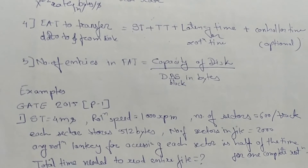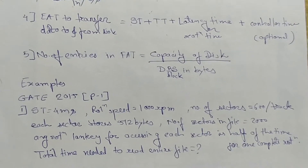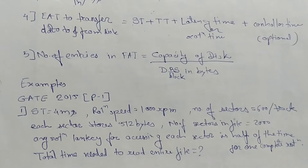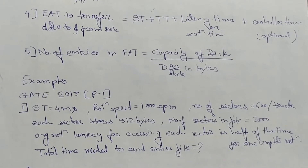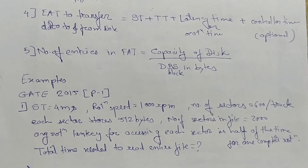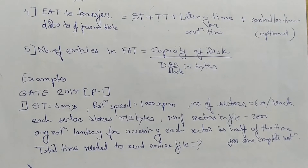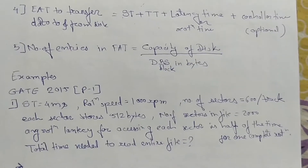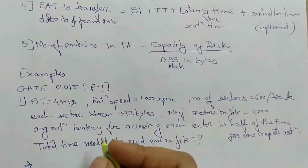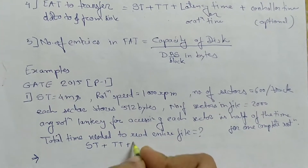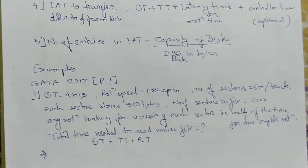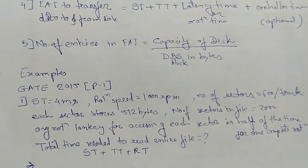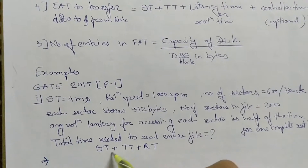In this question, seek time is given as 4 milliseconds, rotation speed is 10,000 RPM, number of sectors is 600 per track, each sector stores 512 bytes, and the number of sectors in the file is 2000. Average rotation latency for accessing each sector is half the time for one complete rotation. We need to find the total time to read the entire file, which equals seek time plus transfer time plus rotation latency.